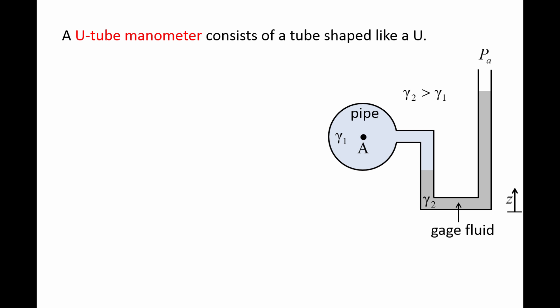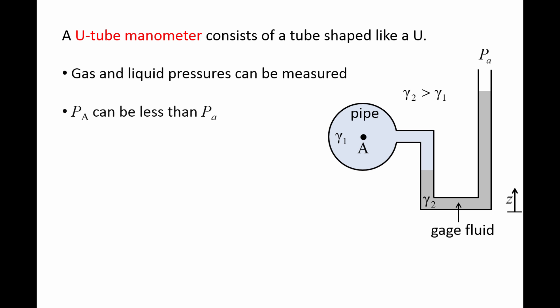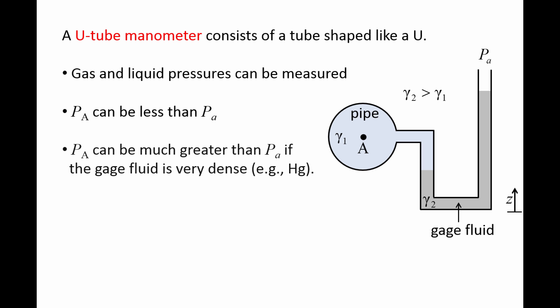In the image on the right, the cross-section of a pipe is shown and a U-tube manometer has been attached to the right side of the pipe. A second fluid, called a gauge fluid, is placed inside the tube and it has a higher specific weight than the fluid in the pipe. The use of a gauge fluid means that the pipe could be filled with a liquid or a gas.